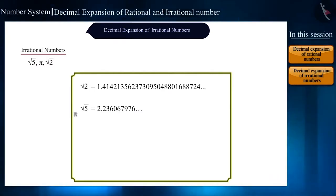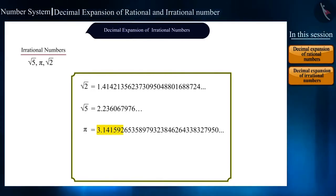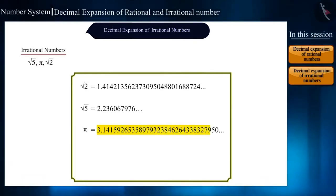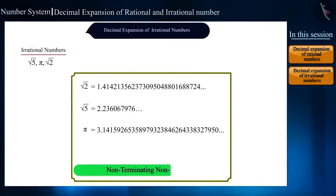You must be familiar with pi. Its decimal expansion is also like this. Here also, the numbers are neither getting repeated nor are they ending. Thus, we can conclude that the decimal expansion of irrational numbers is non-terminating, non-recurring.